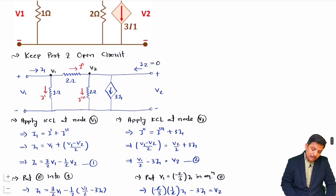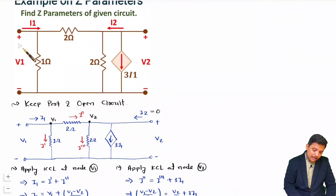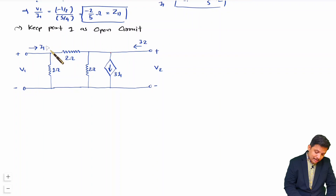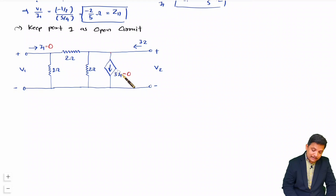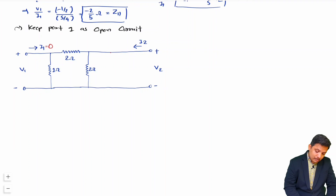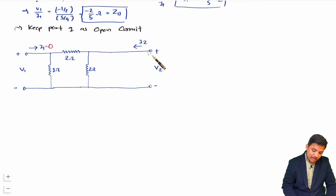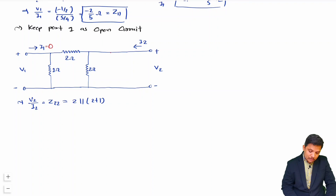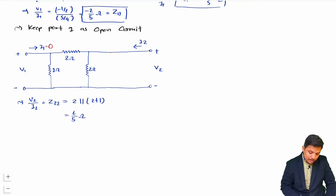For the remaining two parameters, port 1 is open circuit, meaning I1 = 0. Since I1 = 0, the dependent current source 3I1 equals zero and must be removed from the circuit. Now Z22 = V2/I2 is found by measuring the impedance at port 2 terminals: the 1 Ω resistor is in series with the 2 Ω resistor (since no current flows through the open port), giving 1 + 2 = 3 Ω in parallel with the 2 Ω resistor. That gives 2‖3 = 6/5 Ω.